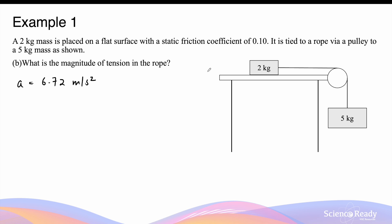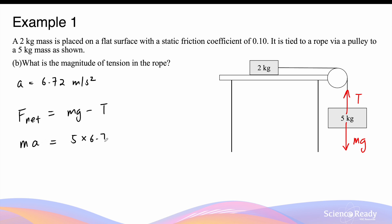Now what about the magnitude of tension in the rope? We've already calculated the acceleration of the two masses, so we can revisit the forces on each mass to calculate tension. For the 5kg mass, the net force equals the downward weight force minus the tension force. Using Newton's second law: 5 × 6.72 = 5 × 9.8 − T. So tension equals 5 × 9.8 − 5 × 6.72, which gives a value of 15.4 Newtons.